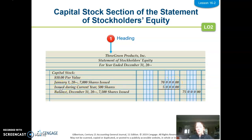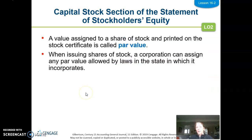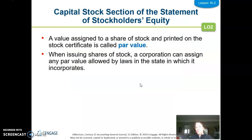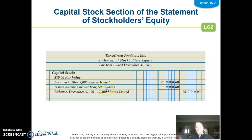7,000 shares times $10 par value equals $70,000. Then we issued during the current year 500 shares. I knew that because I had a credit where I issued more shares — I debited cash for $5,000 and credited capital stock for $5,000. So 500 shares at $10 per share is $5,000. Adding that to my beginning balance gets me to my ending balance of $75,000 at year end, which matches the general ledger account. That is your entire capital stock section.